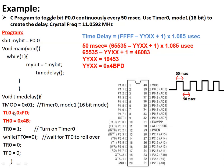The code uses an infinite loop toggling bit P0.0. A time delay function is called each time. Inside the function, timer 0 in mode 1 (16-bit mode) is used. The value 0x4BFD is loaded, the timer is started, and the code waits for the overflow flag TF0 to become 1. Once set, it exits the loop, stops the timer, resets TF0, and the time delay function restarts, reloading the initial values. This process continues in the infinite while loop.